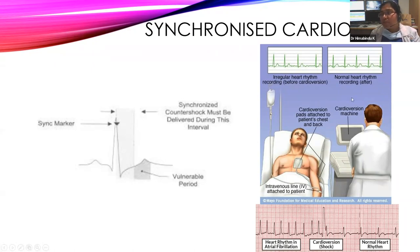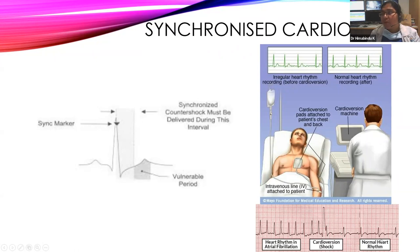In an elective cardioversion procedure, the patient will have IV access, fluids, pads connected, and the doctor views the rhythm on the cardioversion machine. Sedation is given since the patient is awake and will feel pain. After cardioversion, the ECG shows the rhythm reverted to a normal heart rhythm.